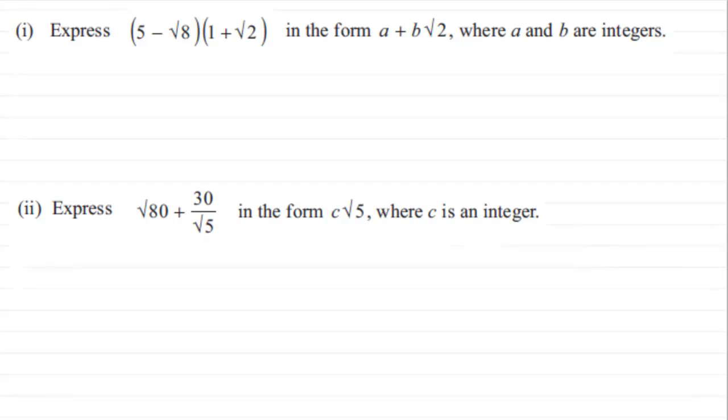Okay, welcome back. Let's see how you got on. With the first part, we've got to express (5 - √8)(1 + √2) in the form a + b√2, where a and b are integers. To do something like this, I first want to copy the question out: (5 - √8)(1 + √2).